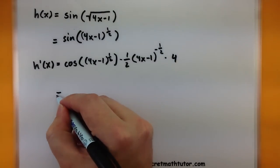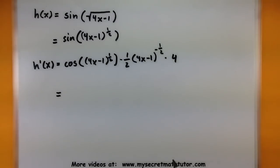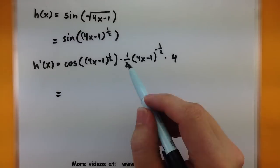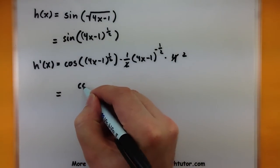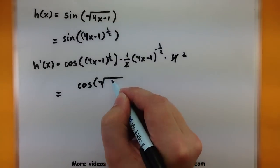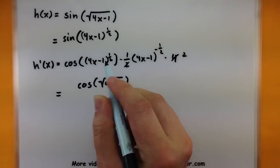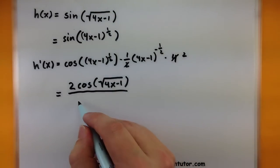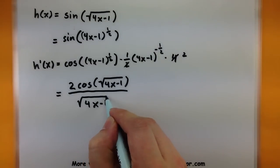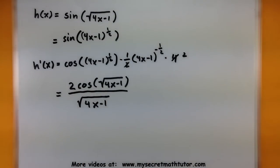So let's see. I'll have a 4 that will cancel out with one of these 2s. This will end up on the bottom since it has a negative exponent, and all of this will end up on the top. So I'll have cosine of the square root of 4x minus 1, multiplied by 2, all divided by the square root of 4x minus 1. There you go. So you can see that if you really understand the chain rule, doing functions inside of functions inside of even more functions, it's actually not so bad. You're really just looking at the changes of each component in that composition.